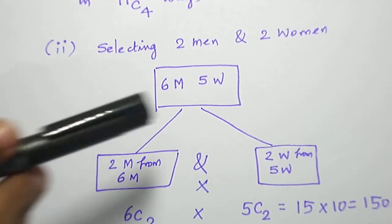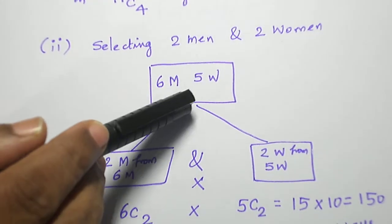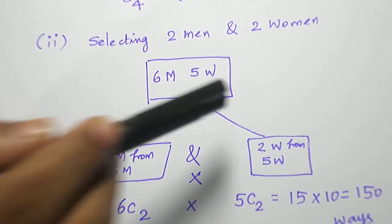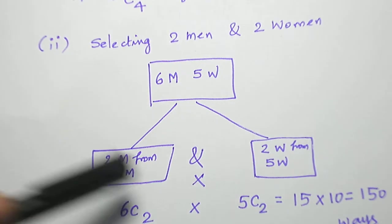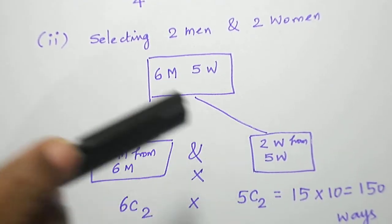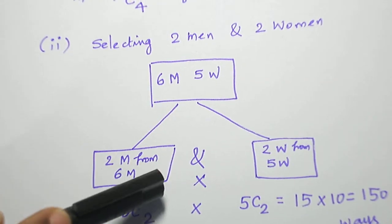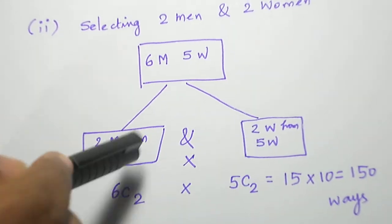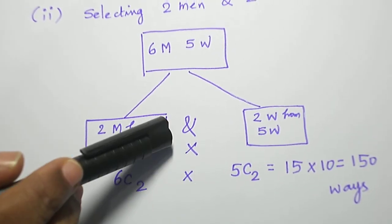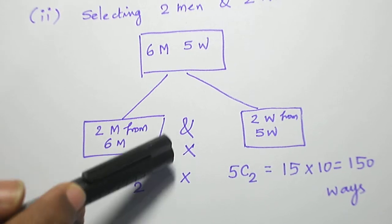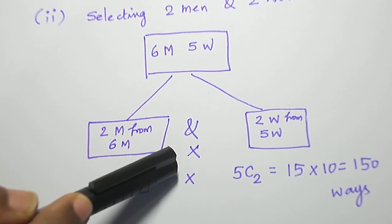Let me subdivide into subtasks. First, let me select two men, and then two women. These two must be done simultaneously. Only then we will have two plus two, four persons. When doing them simultaneously, we have to do multiplication.